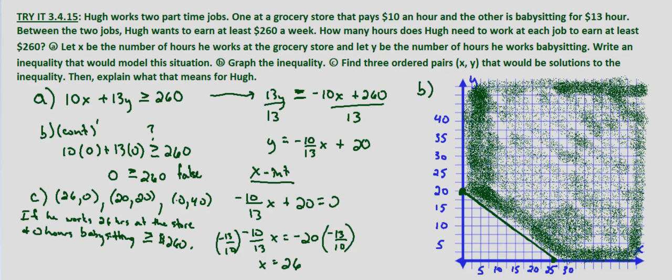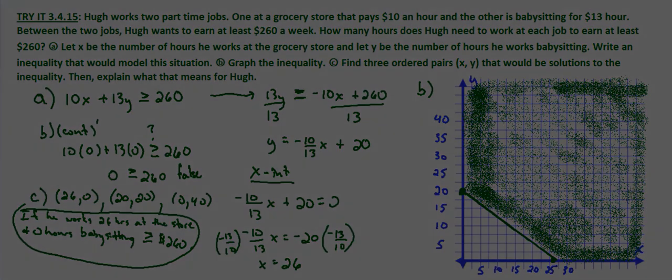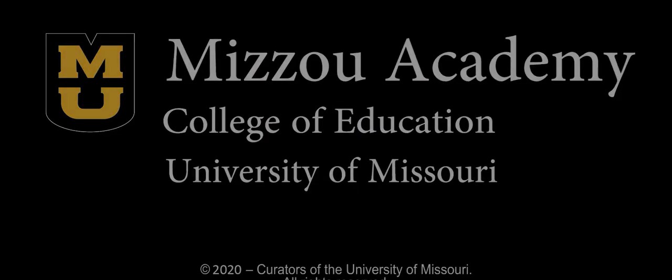And you can figure out the exact amounts by plugging it into 10X plus 13Y, just the expression. But we know since all of those are in the shaded region, pick any point in the shaded region, and that combination of hours at that point, where X is the number of hours at the grocery store and Y is the number of hours babysitting, he's going to make greater than or equal to $260.